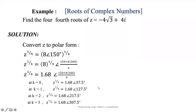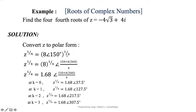For example, find the four fourth roots of z equals negative 4√3 plus 4i. First, convert this into polar form — you can use your calculator directly. Squaring and summing the terms and taking the square root gives r equals 8. For the argument, arctangent of (4 over negative 4√3) gives 150 degrees. So the polar form is 8 at argument 150 degrees, raised to 1/4.